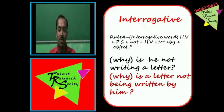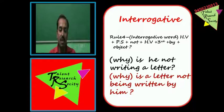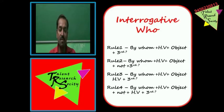Rule 4: Interrogative word + helping word + PAS + not + helping word + third form + by + object. Example: 'Why is he not writing a letter?' Passive: 'Why' ka 'why', helping word 'is', passive subject 'a letter', then 'not', then 'being', third form 'written', 'by him'. Sentence: 'Why is a letter not being written by him?'